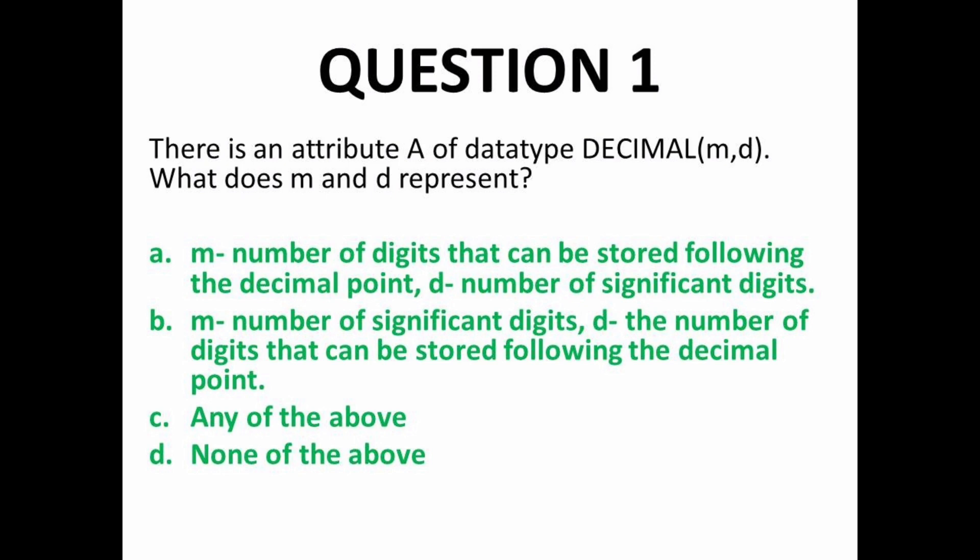For example, 15.80 — how many significant digits are there? Four significant digits: 1, 5, 8, and 0. So M represents the total number of significant digits — that is, how many important digits can be used overall when that value is mentioned.